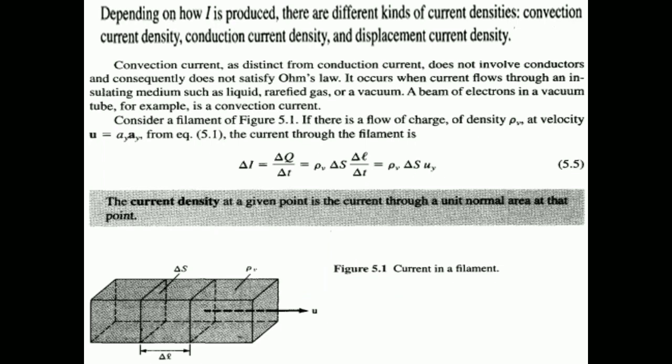For example, the beam of electrons in a vacuum tube is an example of convection current. Consider a filament here — this is the y-direction, z-direction, and x-direction. The current density in the filament is driven by velocity v. Consider a small planar surface dS, and the distance between planar surfaces is dl.